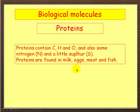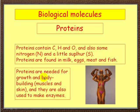Next we've got proteins. Now proteins contain carbon, hydrogen and oxygen. They also contain nitrogen, because they're made of amino acids and it's the nitrogen that makes the amino acids. And in a couple of amino acids there is sulfur. Proteins are found in milk, eggs, meat and fish. Proteins are needed for growth and body building — that means muscles and skin — and also used to make enzymes to help break down other chemicals.